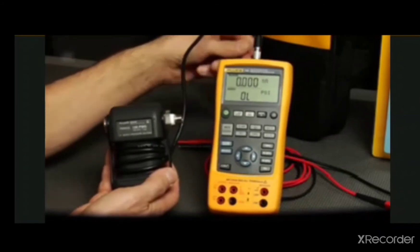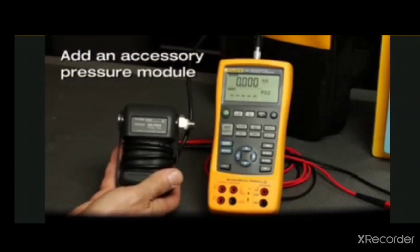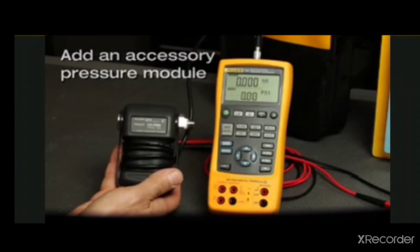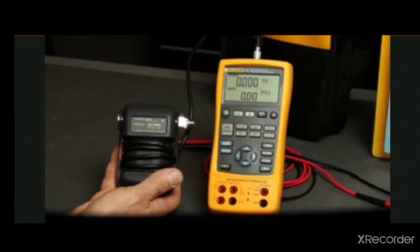Also, we've got your pressure workload covered. You can add an accessory pressure module to test pressure devices. Choose from any one of the 29 pressure ranges.